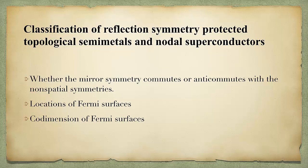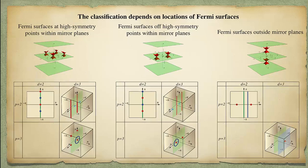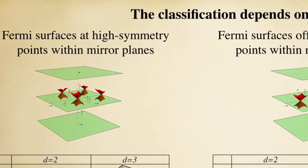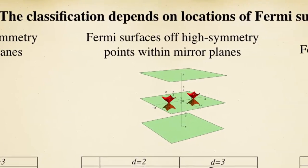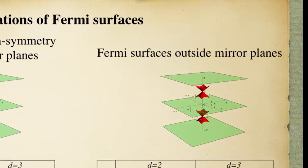Only locations of Fermi surfaces were not discussed previously, so let's talk about those. Three types of Fermi surface locations provide three different classifications. First, Fermi surfaces are located at high symmetry points within the mirror plane — for example, the Fermi points at (0,0), (0,π), (π,0), and (π,0,π) within the green mirror plane. Second, the Fermi surfaces are off the high symmetry points but still within the mirror plane. Third, Fermi surfaces are outside the mirror plane.